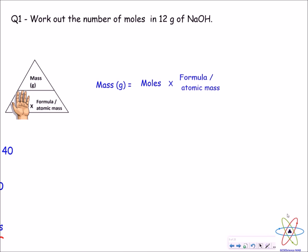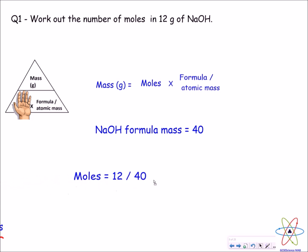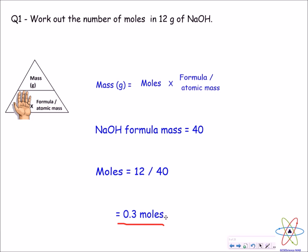Let's practice those equations with some basic questions. Please pause the video and have a go. In this question you have to work out the number of moles of sodium hydroxide. Covering moles, we're left with mass divided by formula mass. The formula mass of sodium hydroxide is 40, and the mass is 12, so 12 divided by 40 gives 0.3 moles of sodium hydroxide.